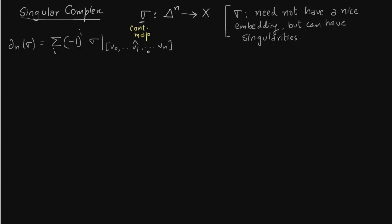Why is it called singular? It is because this continuous map sigma may not have a nice embedding — it can have singularities. Whatever we have said, we are going to use this in the following proposition.